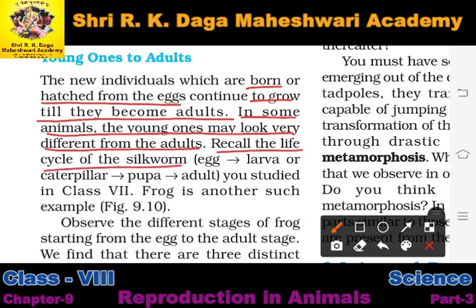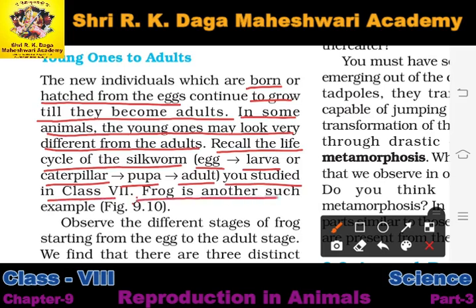Recall the life cycle of the silkworm, which you studied in previous classes. The life cycle of a silkworm goes: first it is an egg, then a larva (also called a caterpillar), then a pupa, and finally it becomes an adult silkworm. You studied this in class 7th.